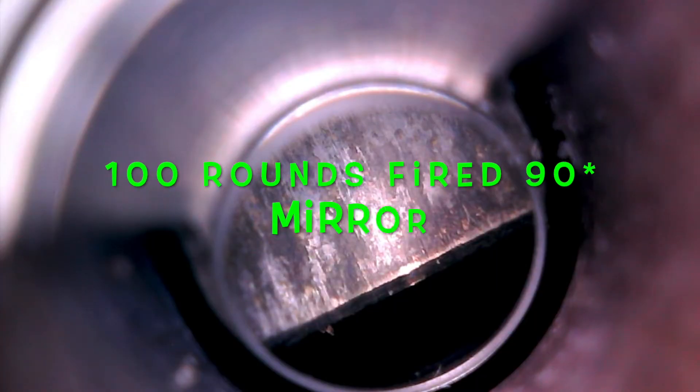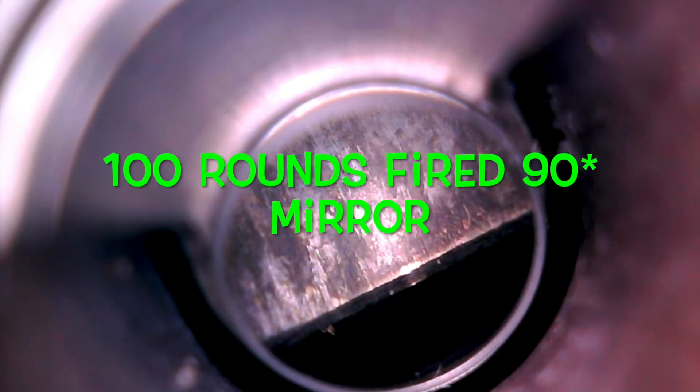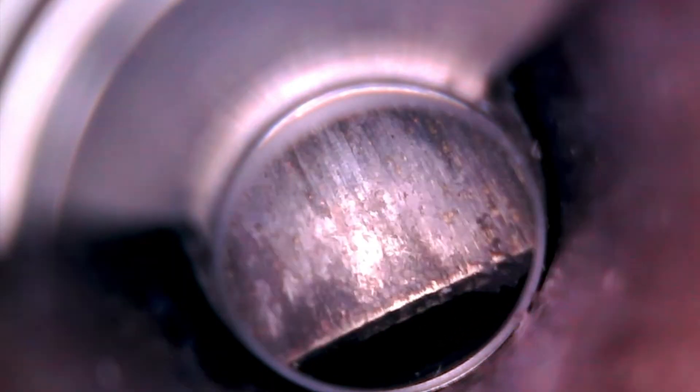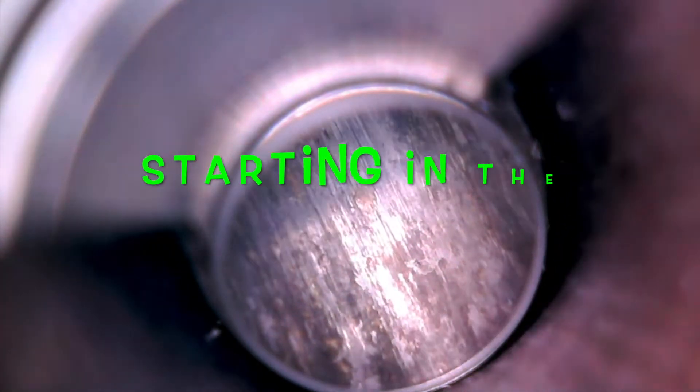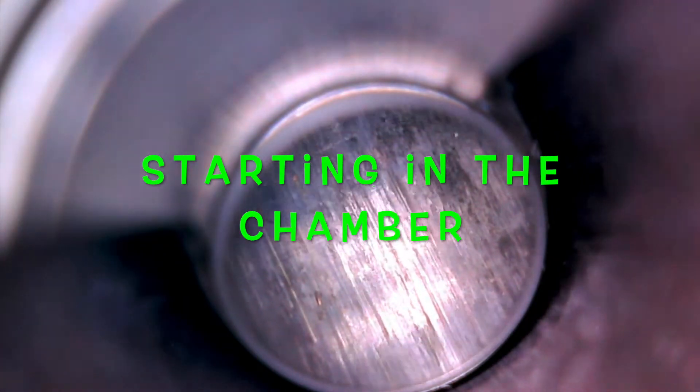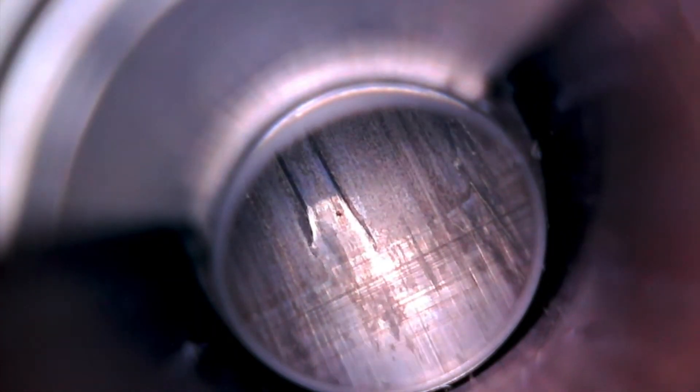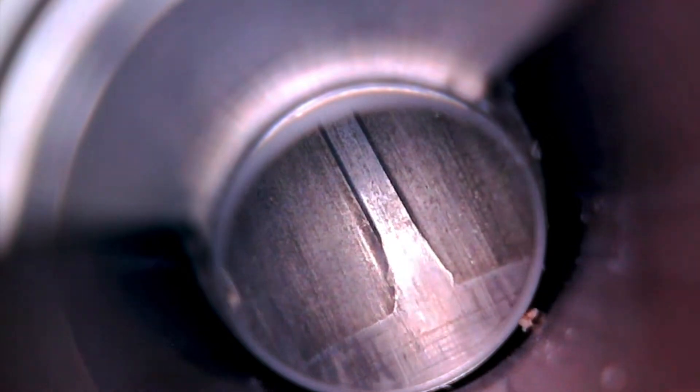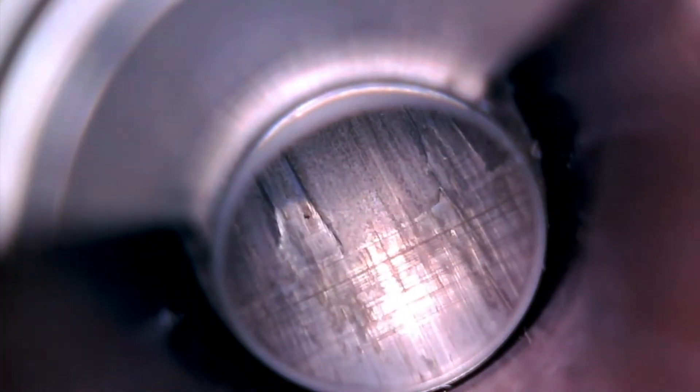That's a 16 inch barrel from the chamber to the muzzle. Now after 100 rounds fired with a 90 degree mirror on, we're gonna look at the chamber side of things. Looks a little rough and pitted and stuff but it's probably not gonna affect anything. Here's the throat and we're getting into the lands now.